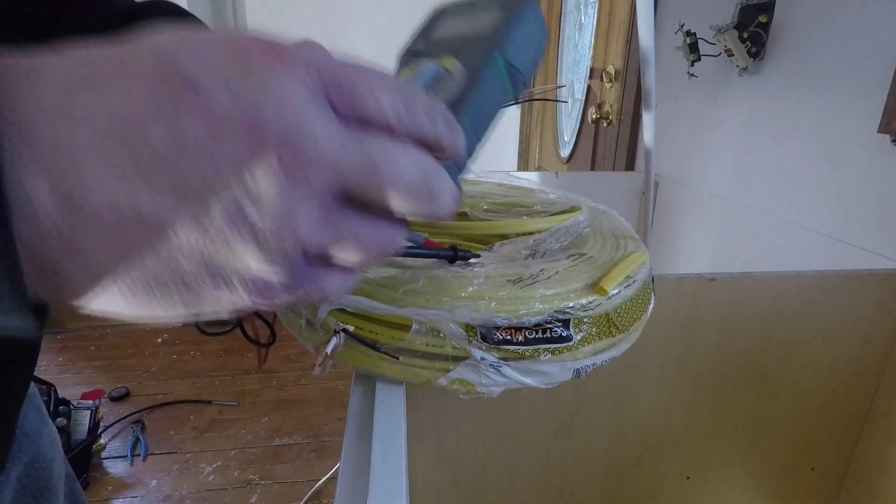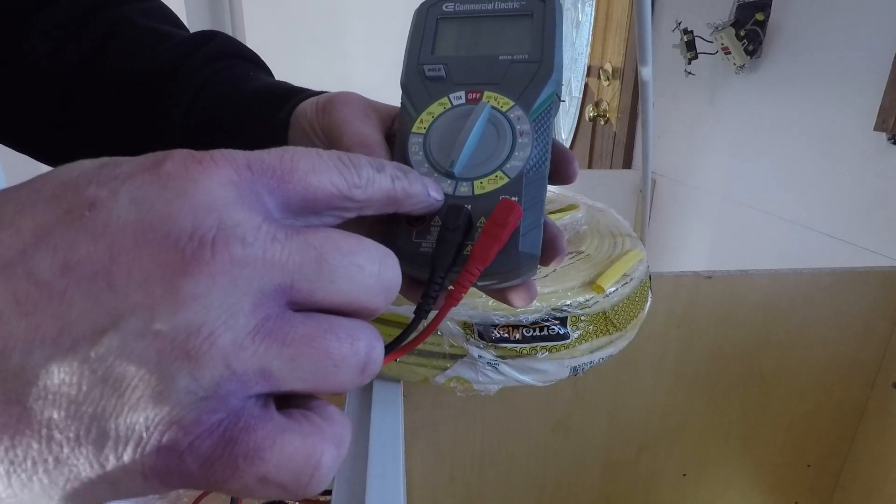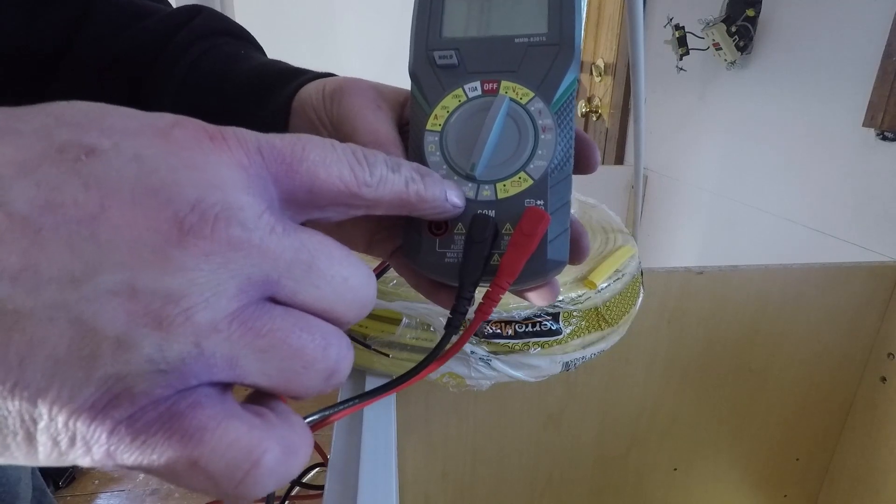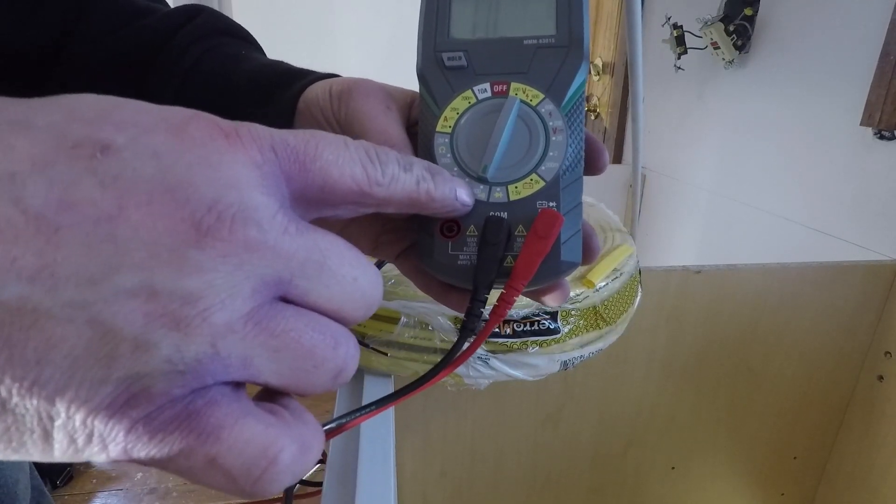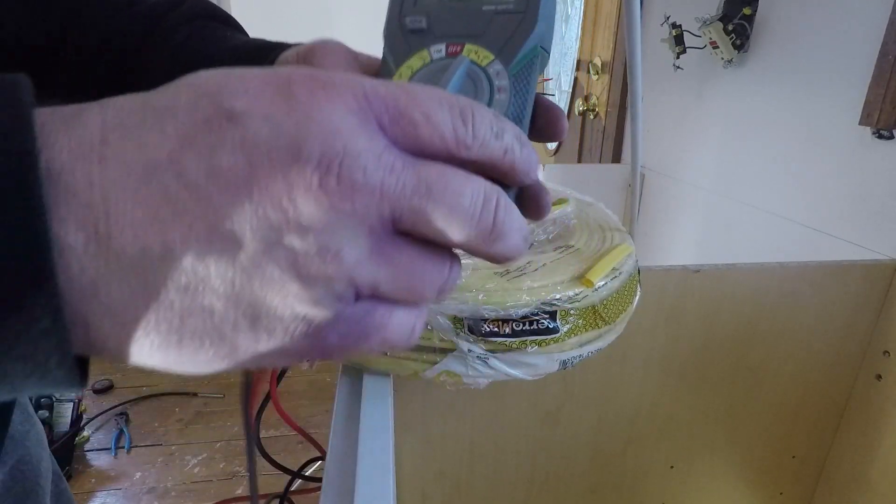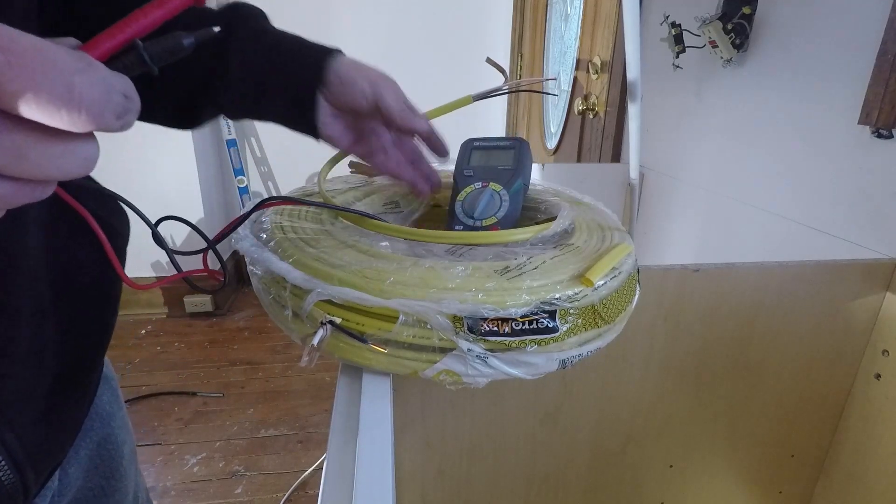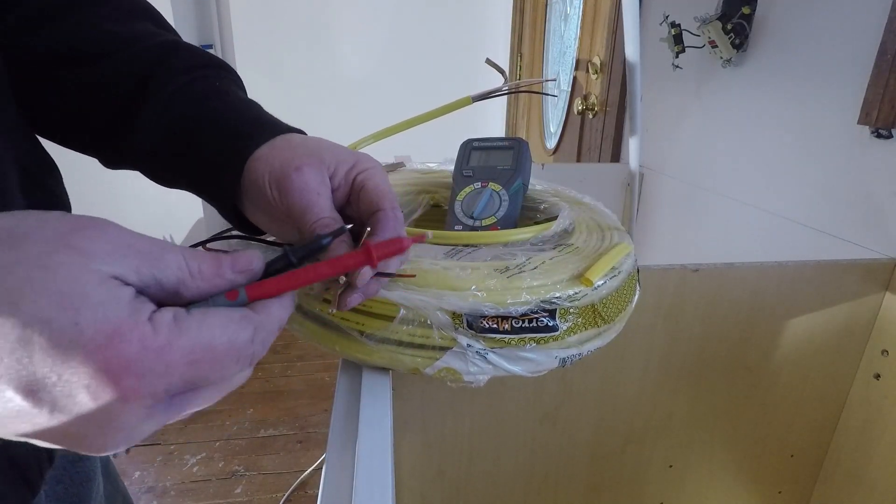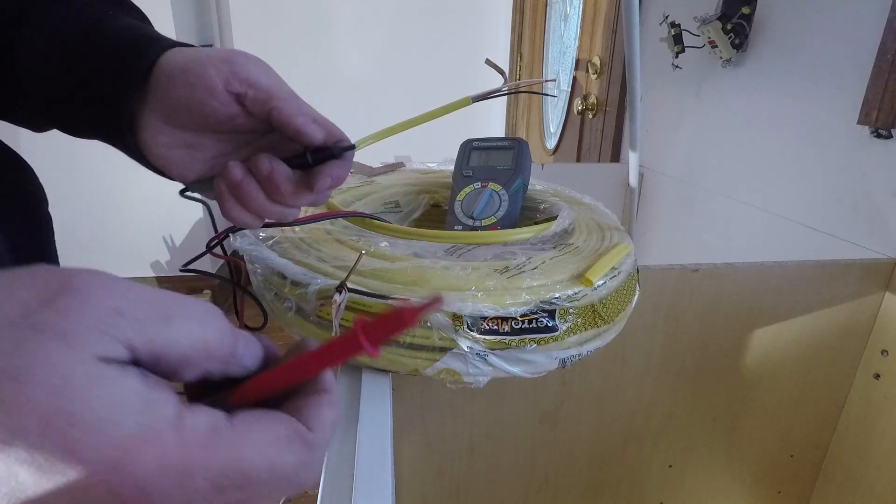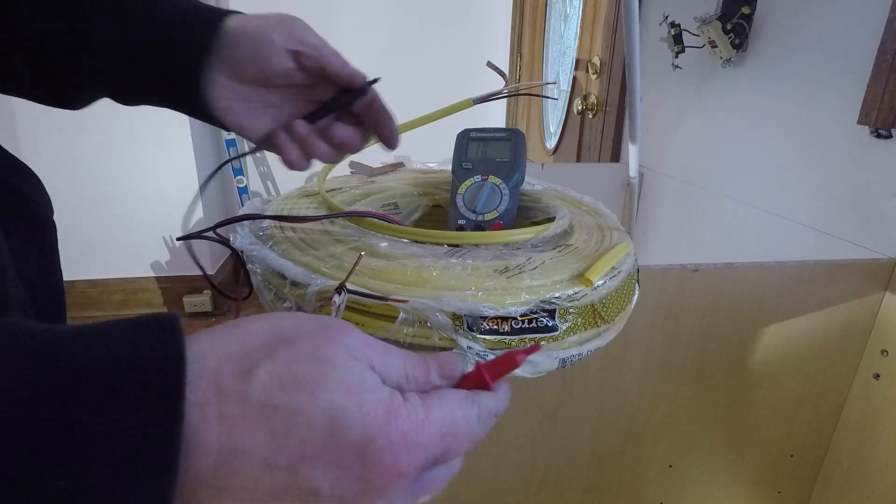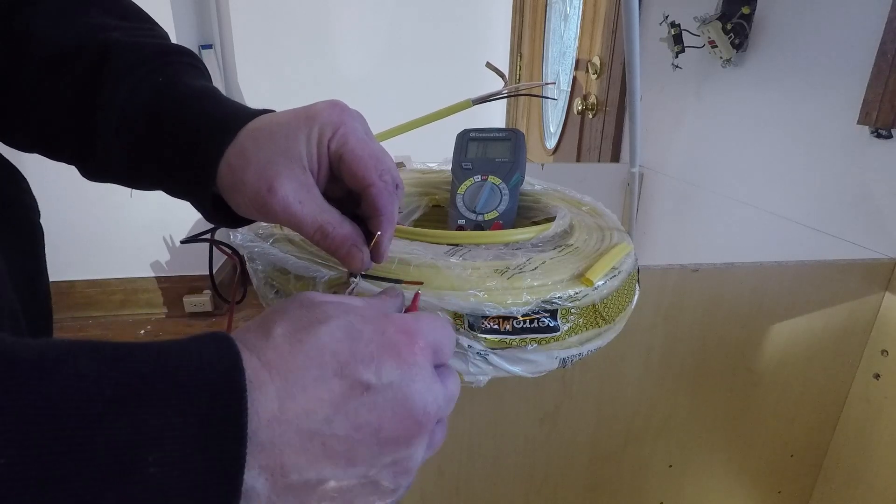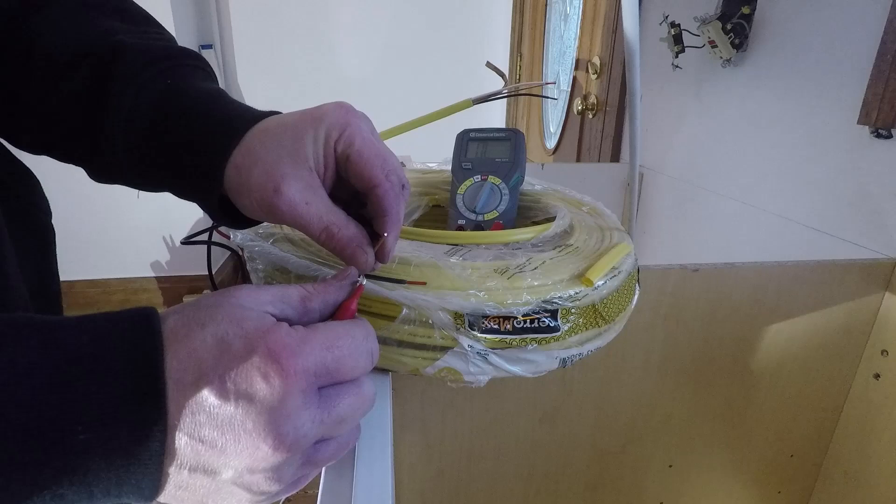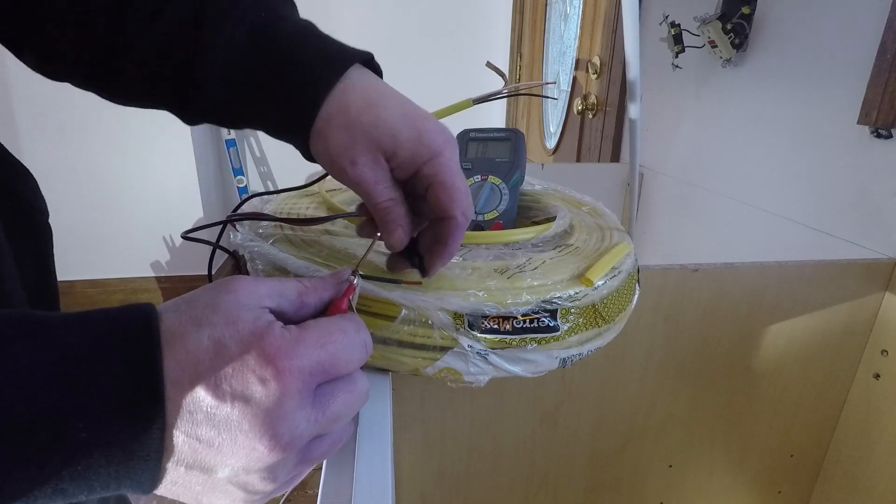I've set my gauge on ohms to check for resistance. I have a little beeper there that will tell me when I have a circuit. Right now there's no circuit. So the first thing we want to do is check between each wire and make sure we don't have a direct short inside the wire spool.